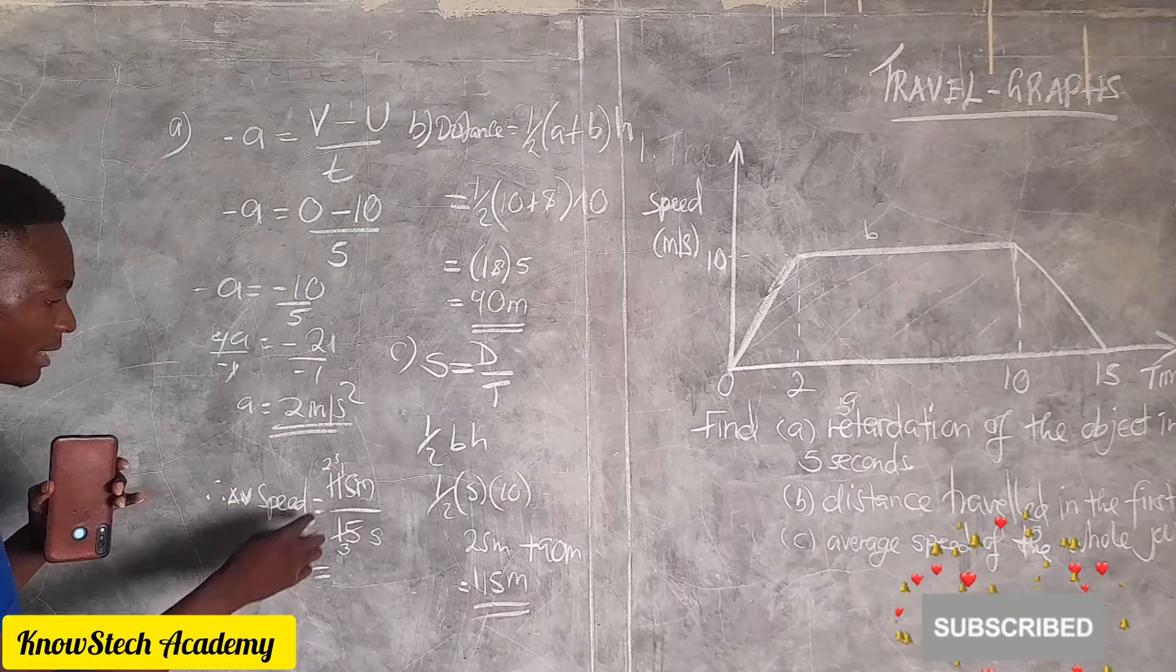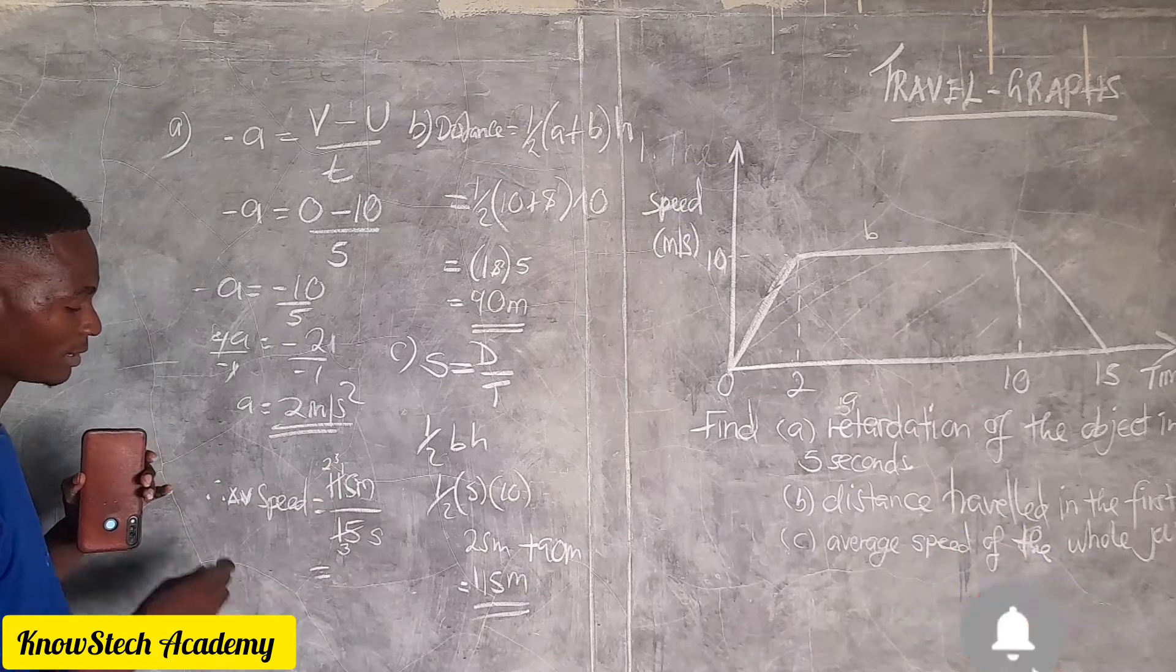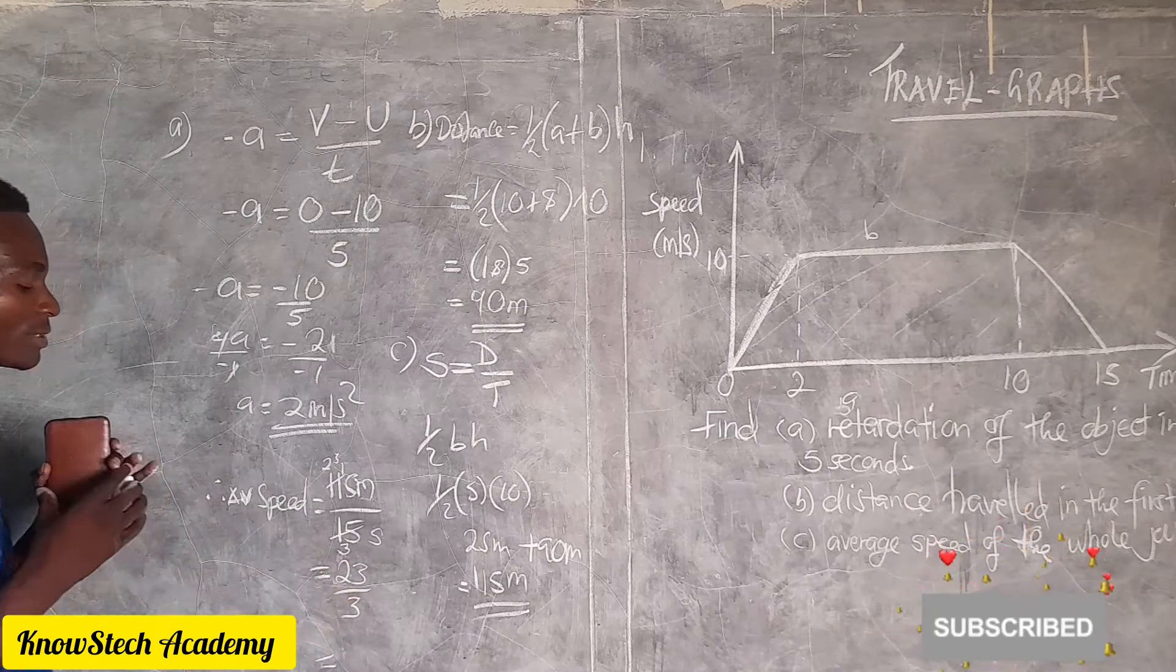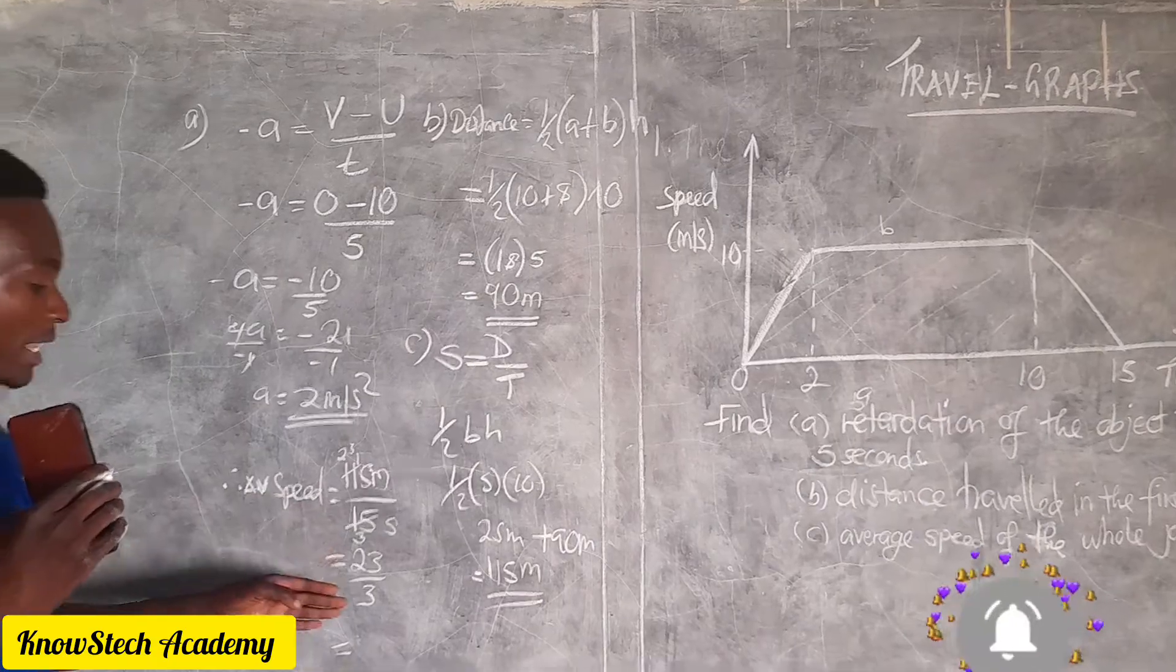5 into 11 is 2 times remainder 1, and we are right. So we have 23 over 3.